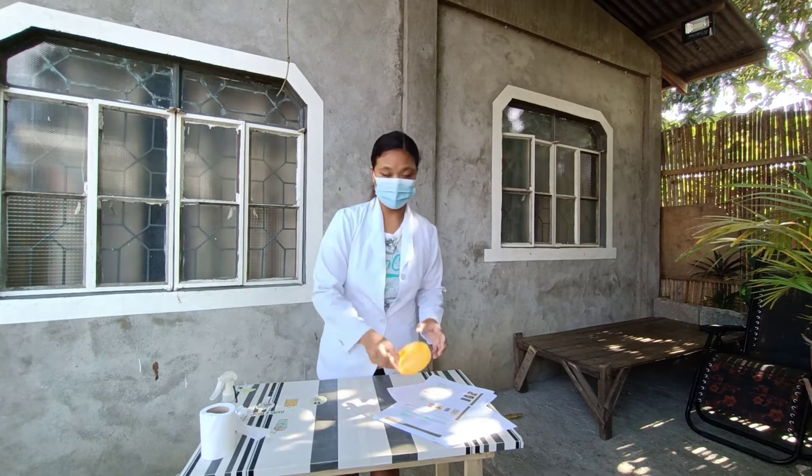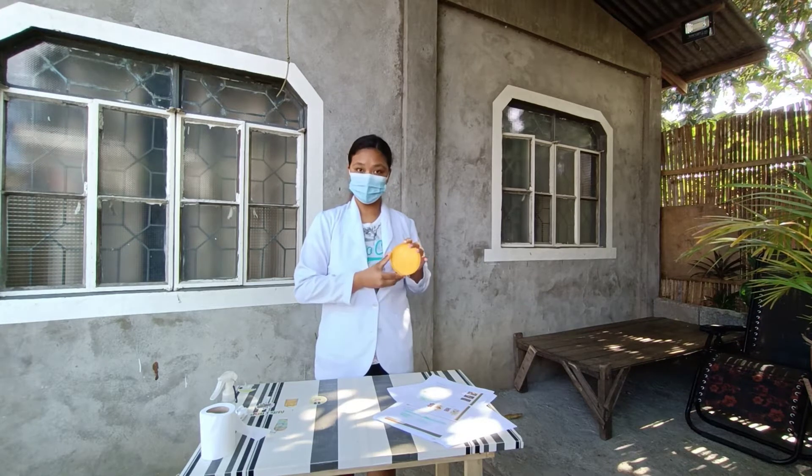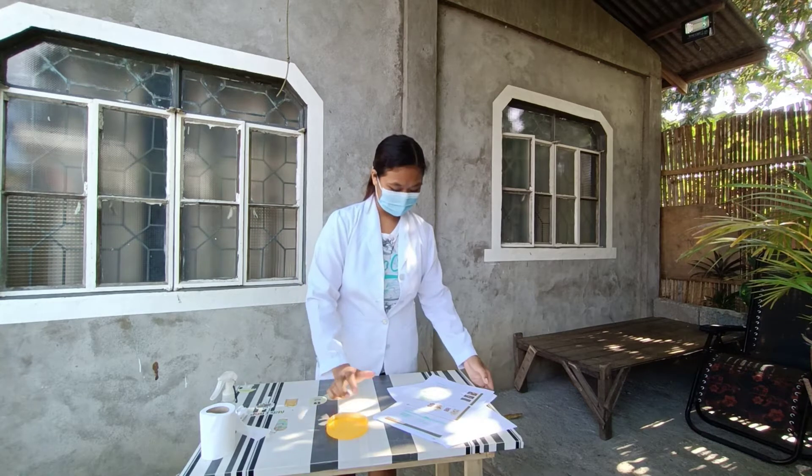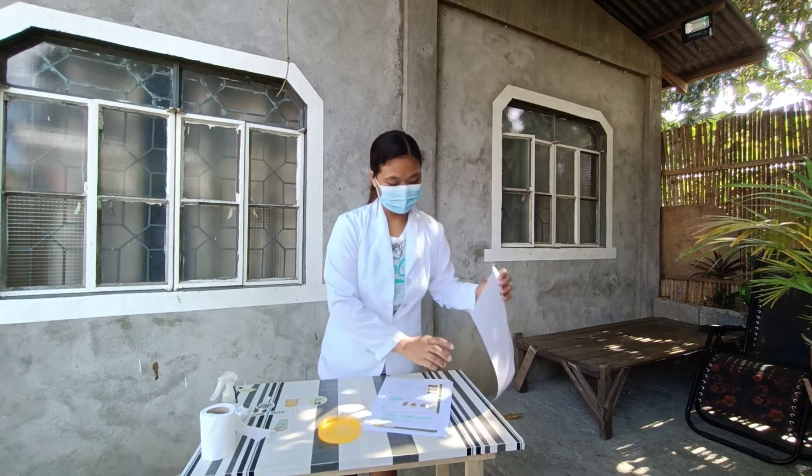In wrapping the petri dishes properly, we need a petri dish. I used an improvised one. And then lastly, a clean sheet of paper or a recyclable one.